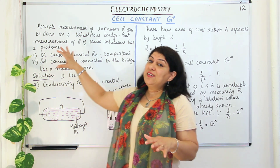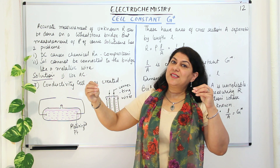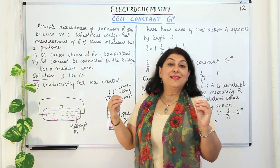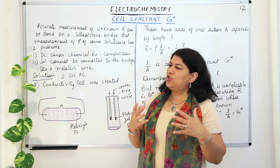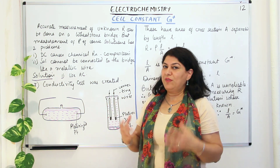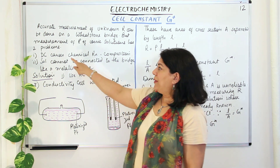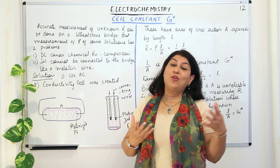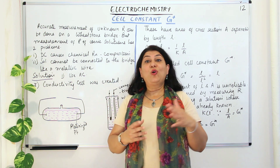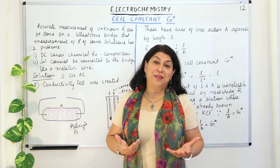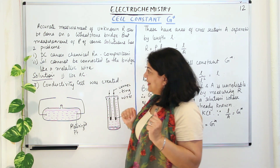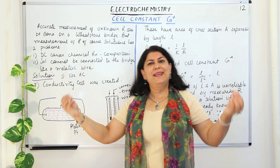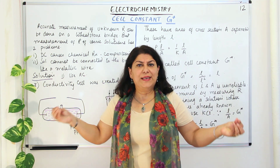In the case of the Wheatstone bridge when we calculate the resistance of a metallic wire, we pass direct current, and therefore we have two problems when dealing with solutions. First, we are passing DC, which will cause a chemical reaction and the composition of the solution would change — and if the composition changes, how would you talk about molar conductivity? The second problem is that the solution cannot be connected like a metallic wire. How will you connect a liquid like a wire?